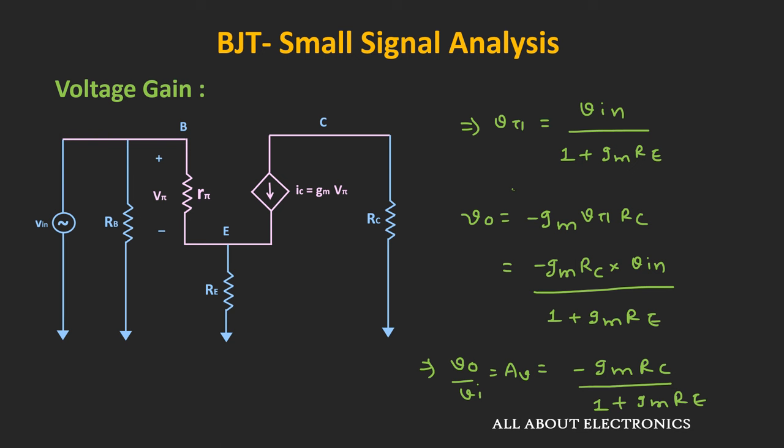This negative sign indicates that there is a phase difference of 180 degrees between the input and the output signal. But more importantly, due to this emitter resistor, the gain is now reduced by the factor of (1 plus gm times Re). Because if you consider the fixed bias case, then for that the voltage gain was minus gm times Rc. That means now the gain is reduced by the factor of (1 plus gm times Re). Similarly, now let's find the expression of the input impedance.